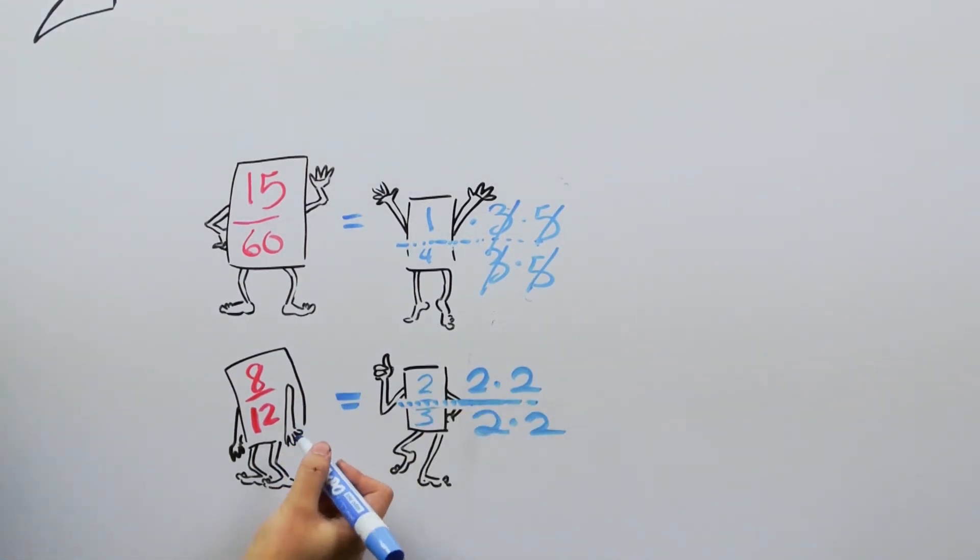Prime number 2 comes out of 8/12 two times, leaving us with 2/3.